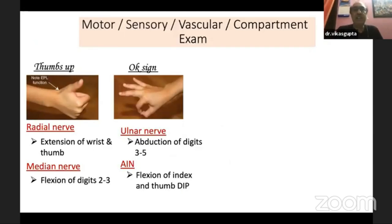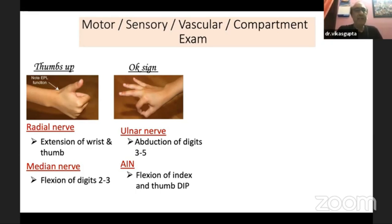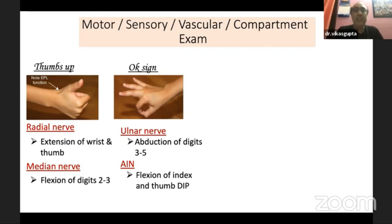Most younger residents fail to document the motor, sensory, and vascular examination, finding it difficult in younger children. Remember two simple signs: getting the child to do thumbs up tests the radial nerve by extension of the wrist and thumb. The median nerve can be tested by flexion of the second and third digits. The OK sign — abduction of the digits — reliably gives function of the ulnar nerve, as well as the anterior interosseous nerve by flexion of index and thumb DIP.